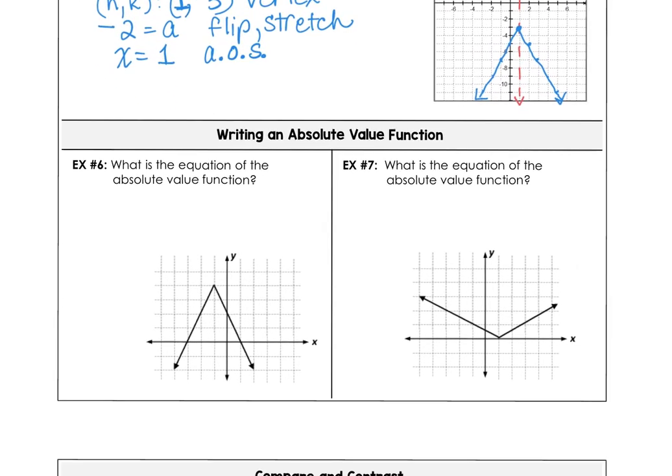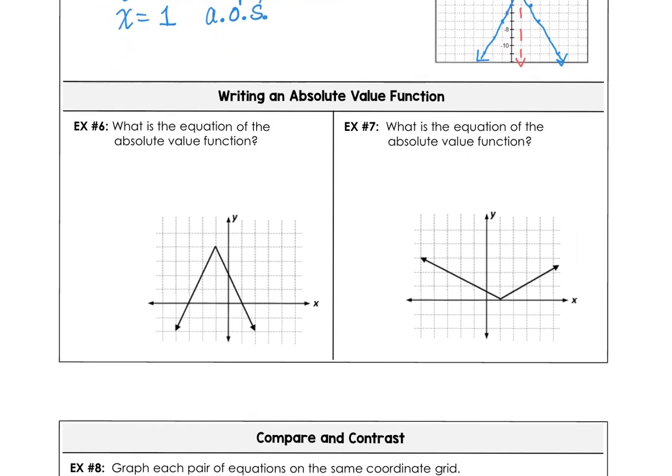In our next examples, let's practice writing an absolute value equation given the graph. What is the equation in example 6? First I notice the h and k values. Our vertex is at negative 1, positive 4.